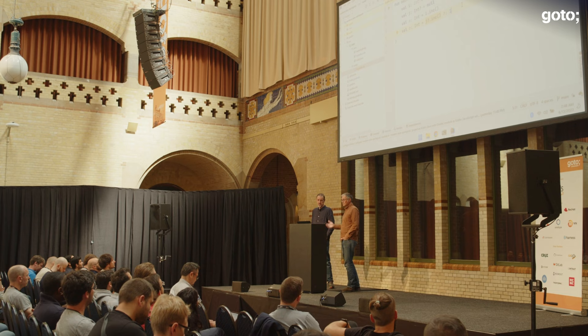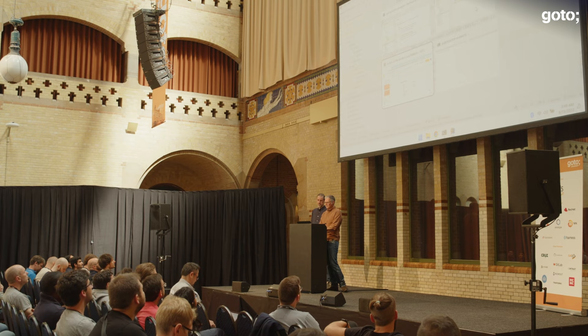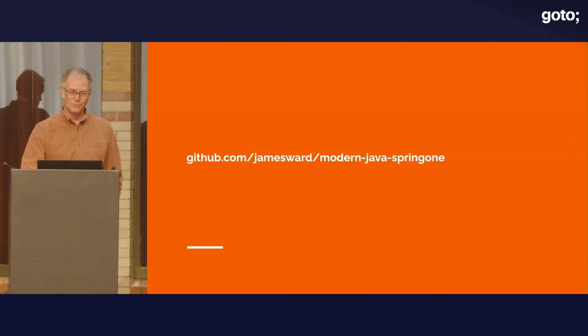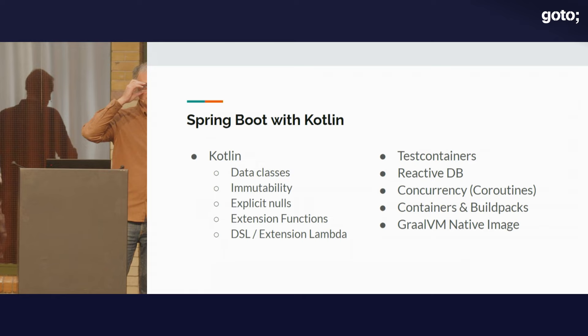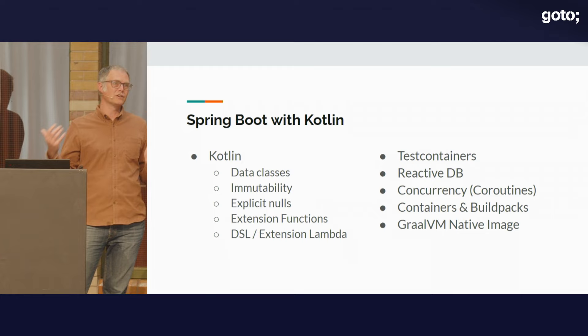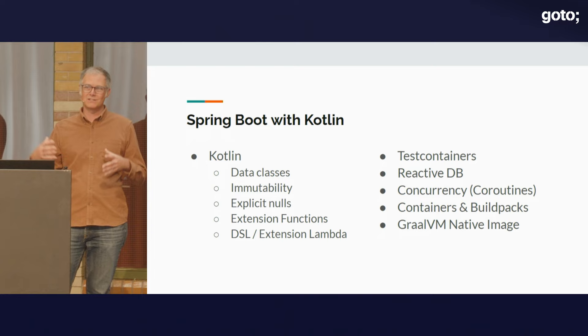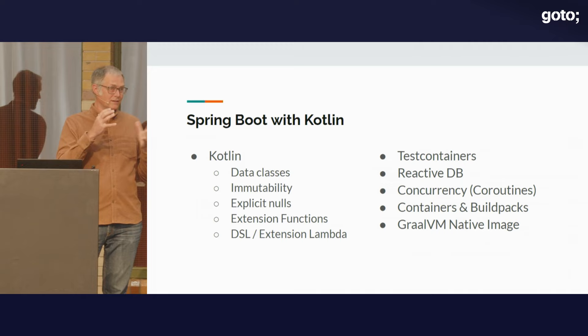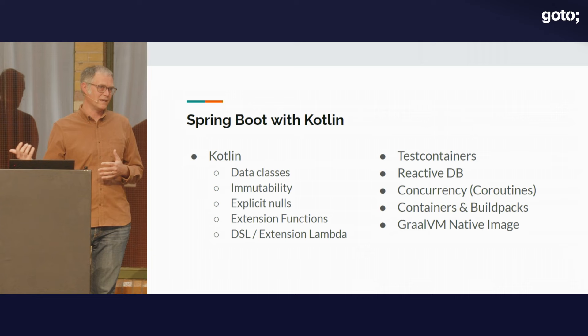So some nice language features there. We talked through nice language features to modernize your Java, and saw some Kotlin for null handling. That code is up on my GitHub. I want to go on now to show some more language features in Kotlin, but also some ecosystem things — because I look at Java as a platform. There are language things that are modern, but also tools, libraries, and frameworks that are modernizing and making our lives easier.